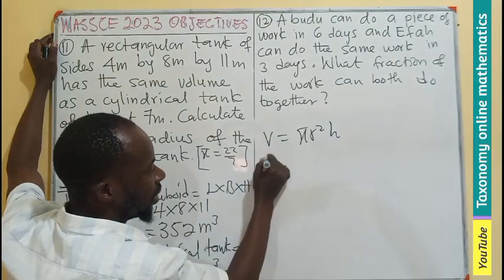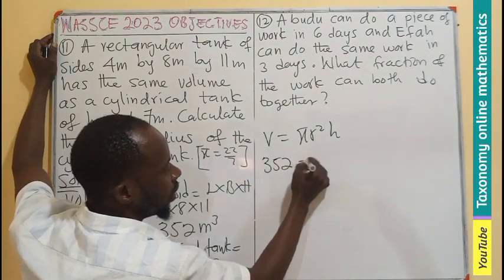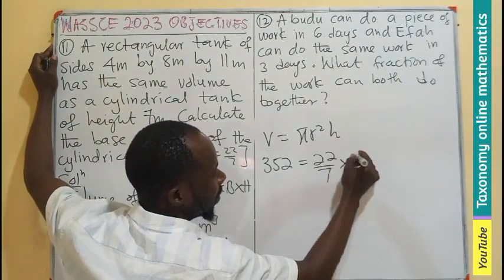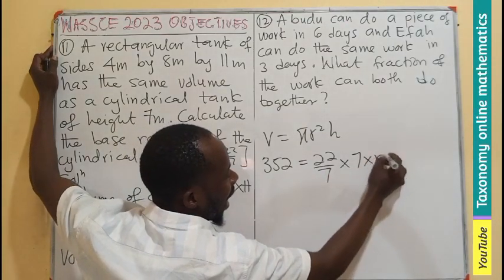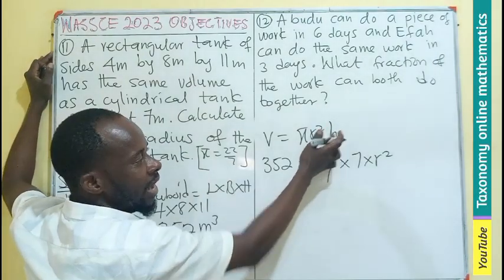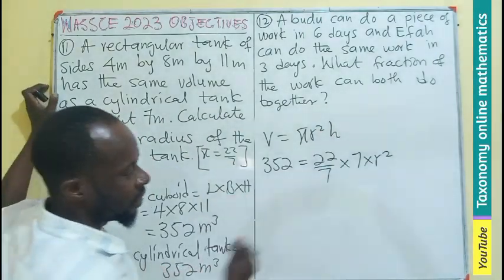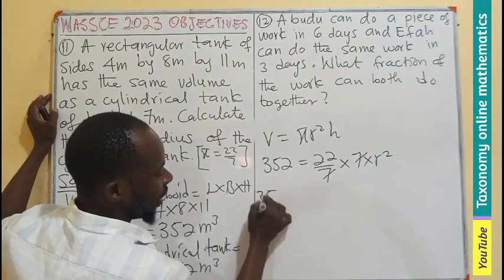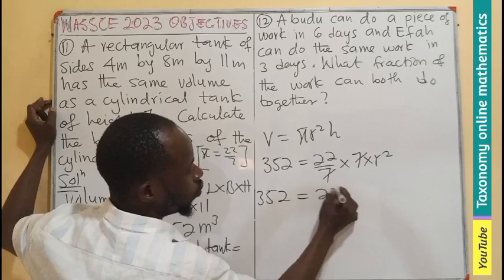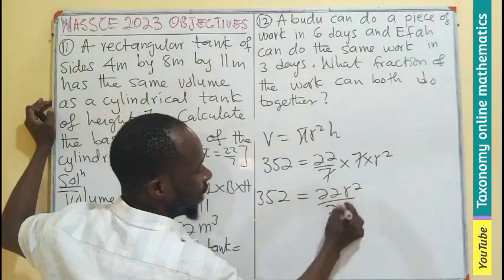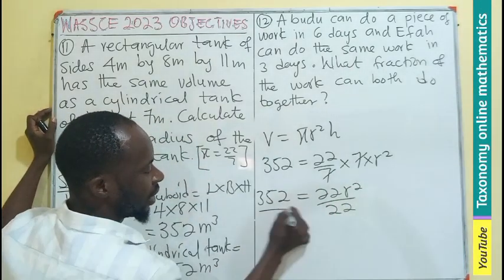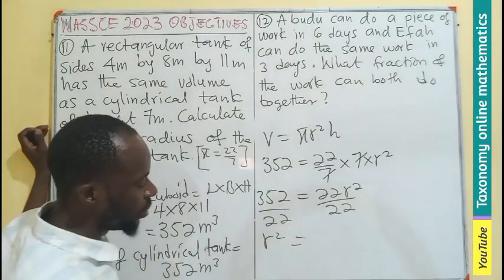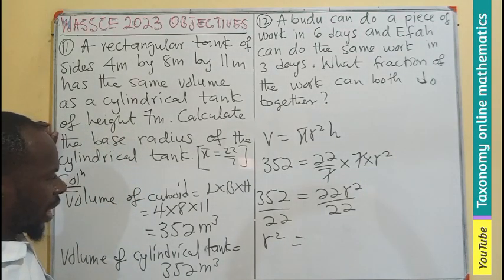Right away, substitution would be 352 equals 22 divided by 7 times 7 times r². Bringing the h value first before the r, this will cancel, leaving 352 equals 22r². I believe we have to clear away that coefficient.